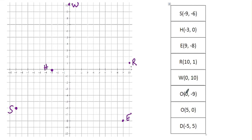The first O is zero over and nine down. The second O is five units to the right and zero units up. And the D is five to the left and five up.